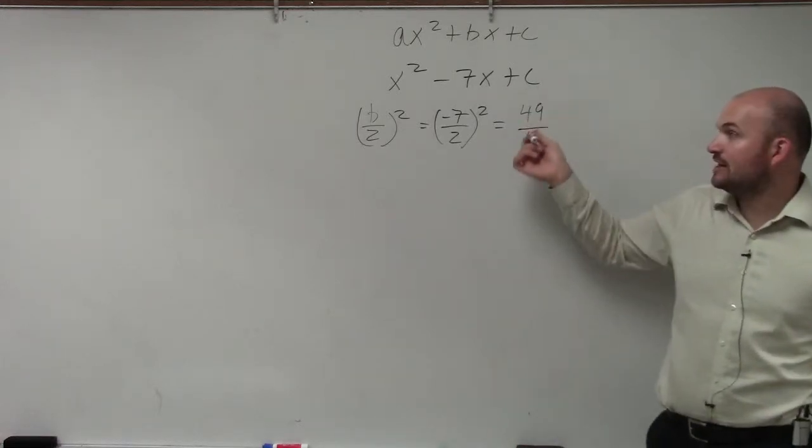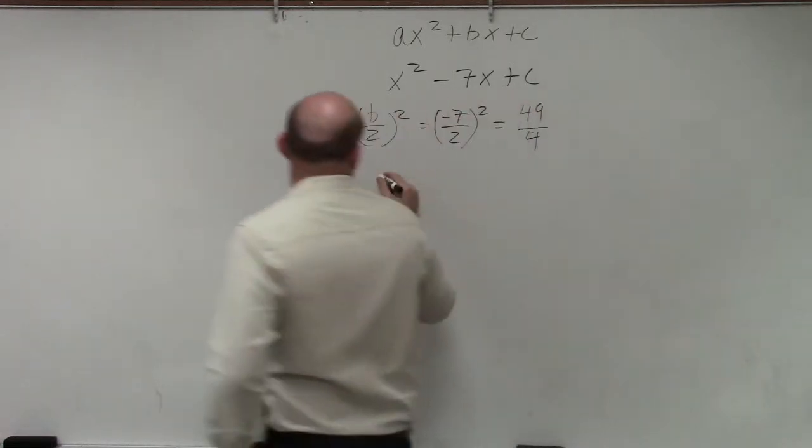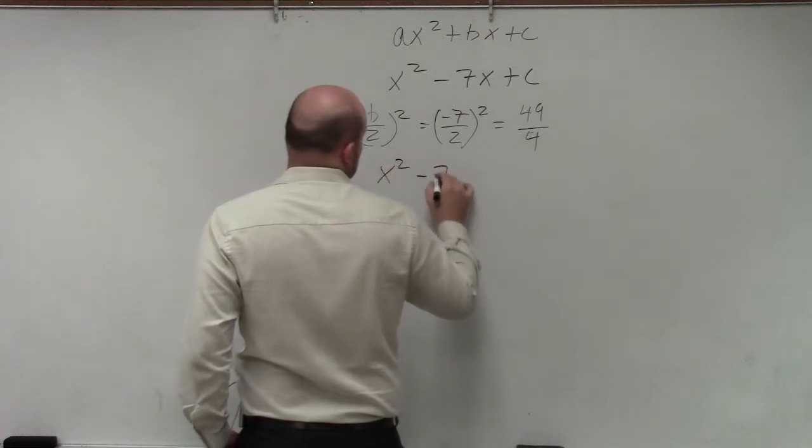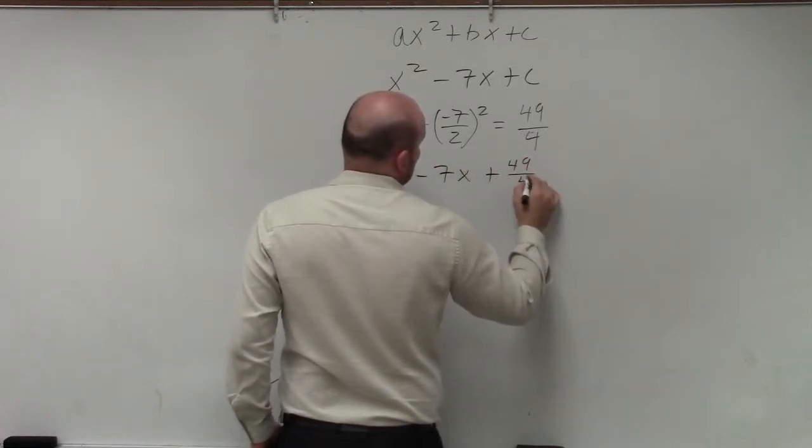So now we just replace 49 over 4 in for c. So we have x squared minus 7x plus 49 over 4.